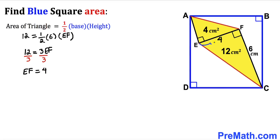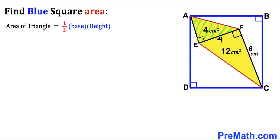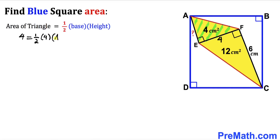Now let's focus on right triangle AEF, whose area is 4 and side length EF is 4. We'll calculate the other side length AE. Filling in the area formula: 4 = ½ × 4 × AE. Dividing both sides by 2 to isolate AE, we find AE = 2 cm.